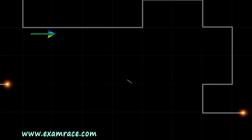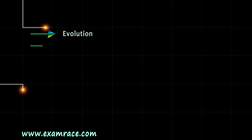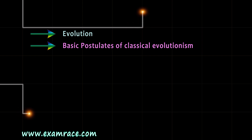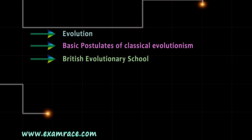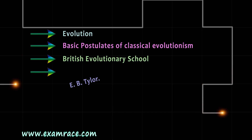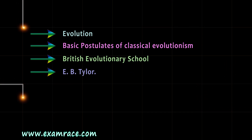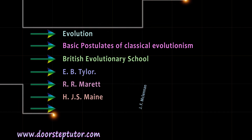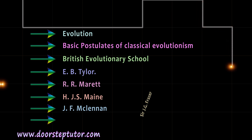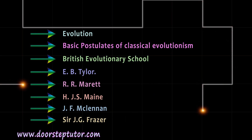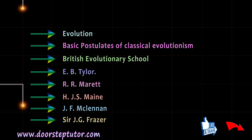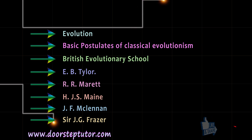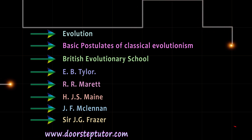In this lecture, we learnt about evolutionism, the basic postulates of classical evolutionism, and the British evolutionary school and its different philosophers: E.B. Taylor, R.R. Marriott, H.J.S. Maine, J.F. MacLennan, and Sir J.G. Fraser. In the next lecture, we will cover the American and German school of classical evolutionary thought. Thank you.